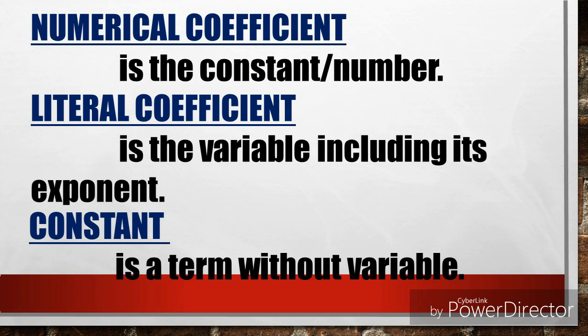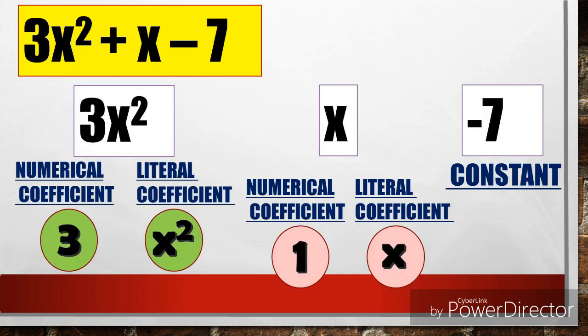Now let's study about the coefficient. We have the numerical coefficient and the literal coefficient. The numerical coefficient is the constant or a number, while the literal coefficient is the variable including its exponent. The constant is a term without a variable. For the polynomial 3x squared plus x minus 7, we have 3 terms. For 3x squared, the numerical coefficient is 3 and the literal coefficient is x squared. For the second term x, the numerical coefficient is 1 and the literal coefficient is x. And negative 7 is the constant.